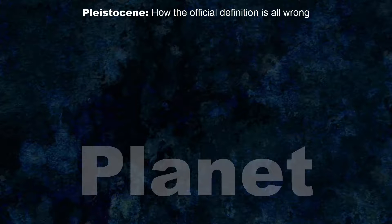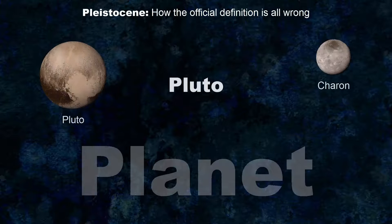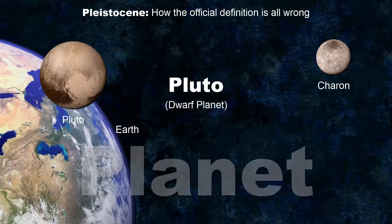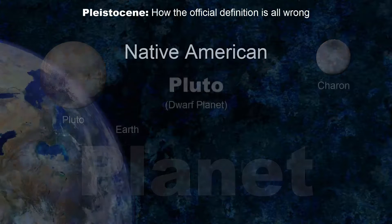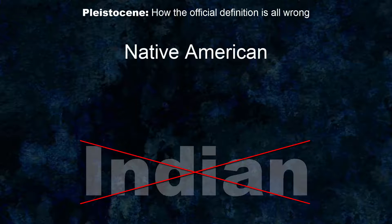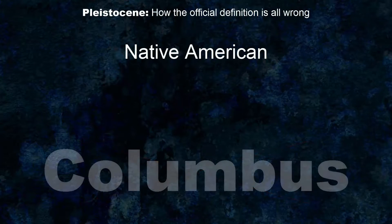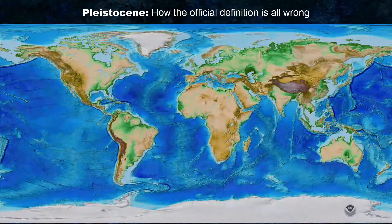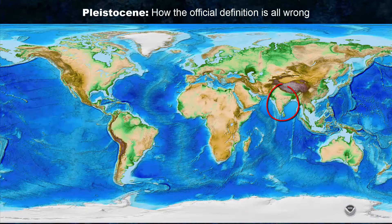Improving the definition did not make Pluto disappear — it was simply reclassified. Scientists came up with a smarter definition. Native Americans are sometimes called Indians, even though they are not from India. The confusion started with Christopher Columbus when he thought he had reached India, but instead bumped into the Americas.